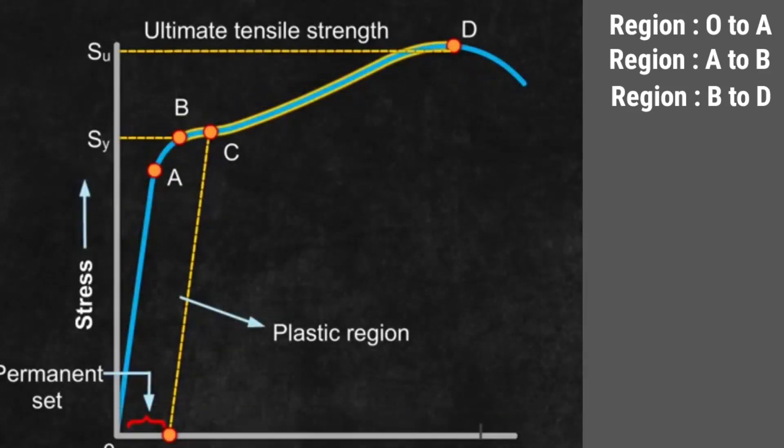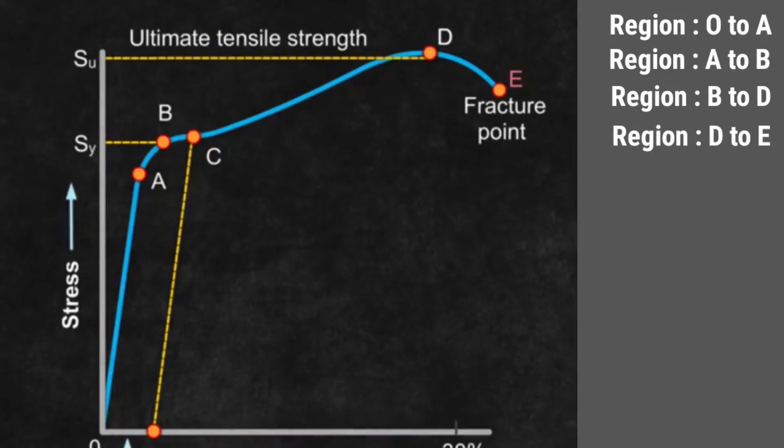Point D on the graph is ultimate tensile strength, SU of the material. Beyond this point, additional strain is produced even by reduced applied force, and fracture occurs at point E. This is called the fracture point.